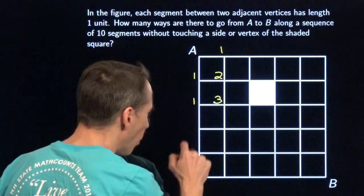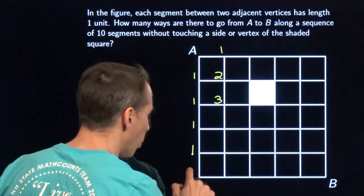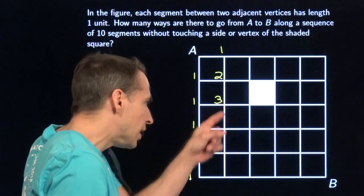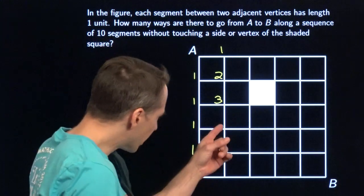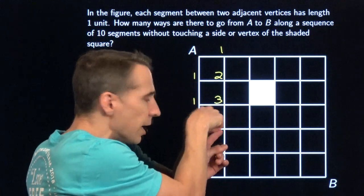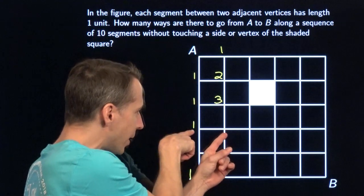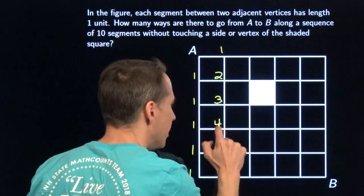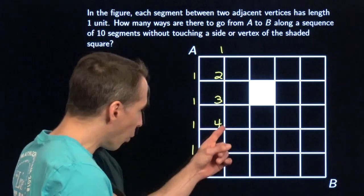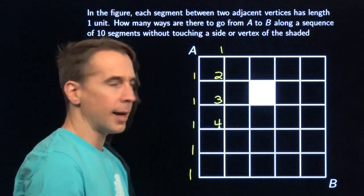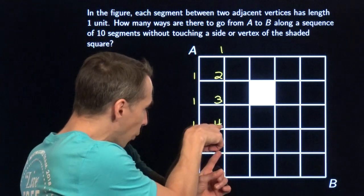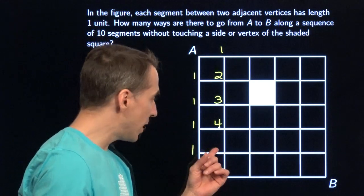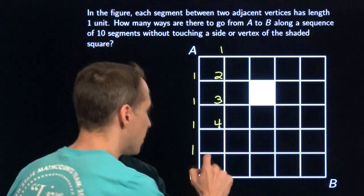There's only one way to get right here, one way to get right here, one way to get right here. To get right there, I either have to come from here or here. There are three ways to go there and then down, and one way to get right there and then go right. So three plus one gives four ways to get right here. And down there — four ways to get there, one way to get there, so four plus one gives five ways to get there.